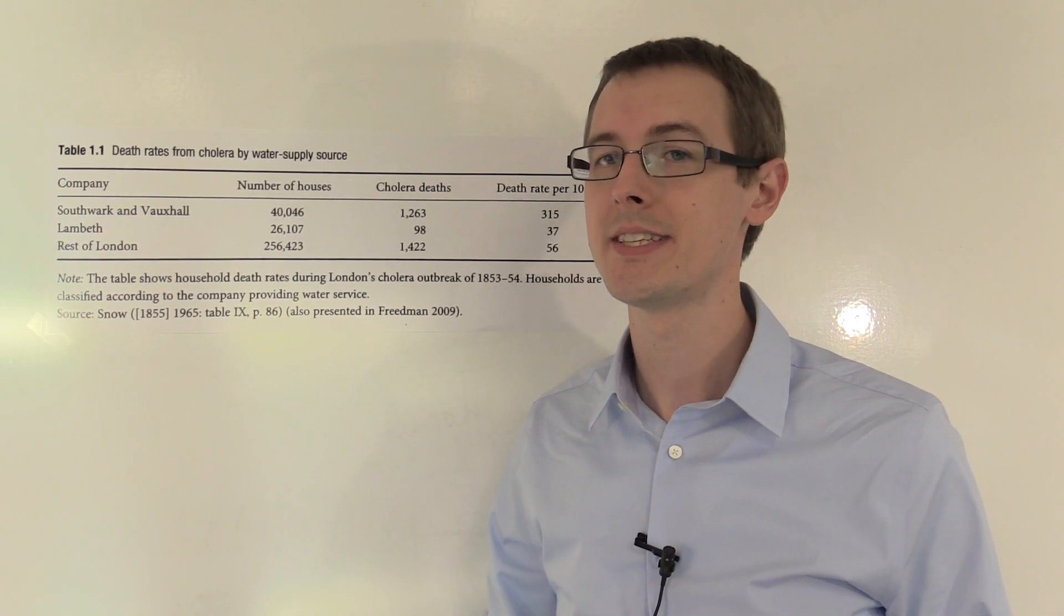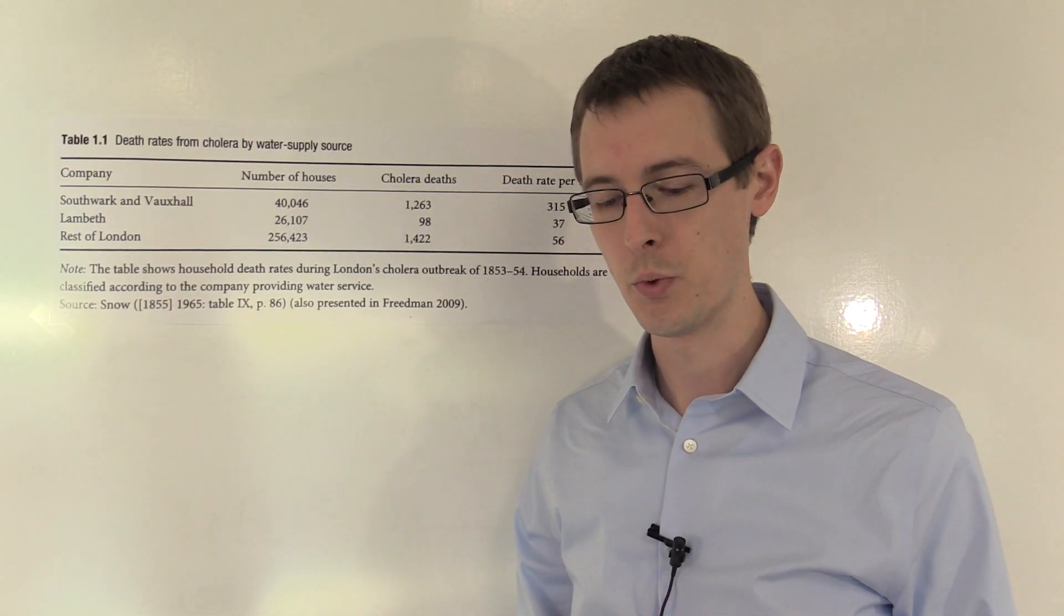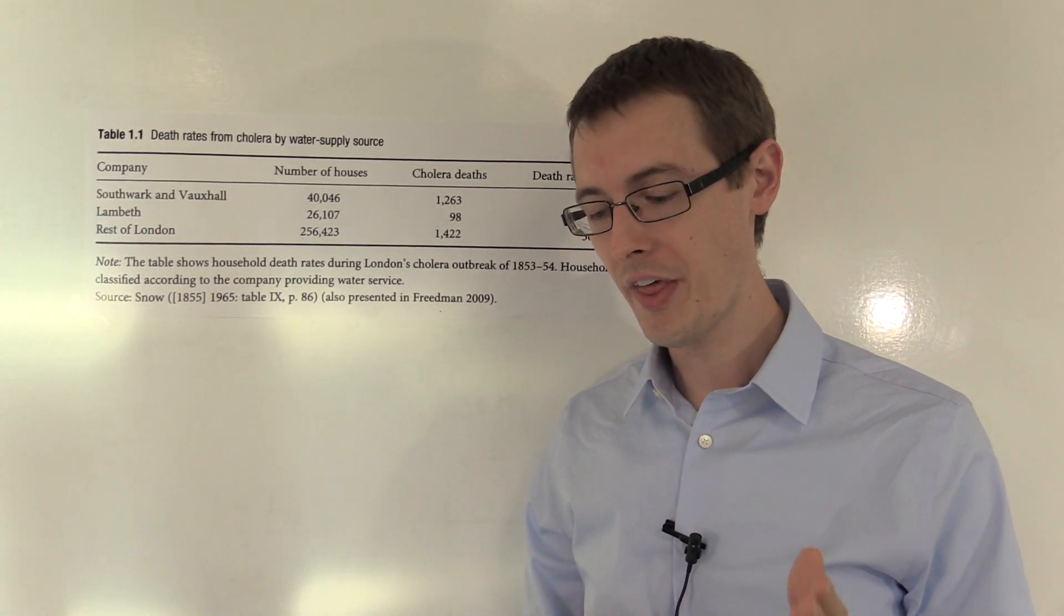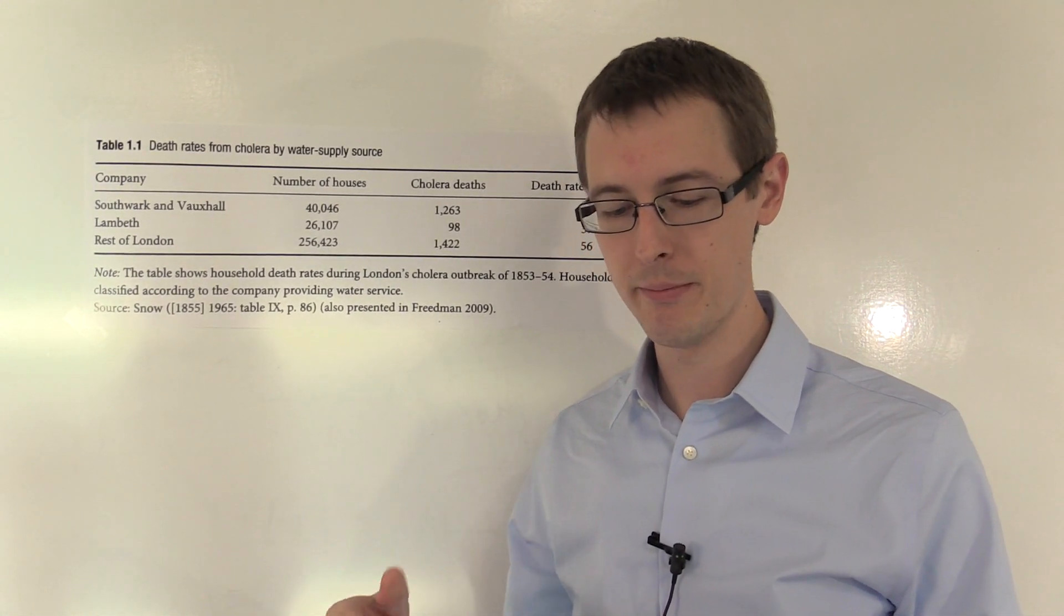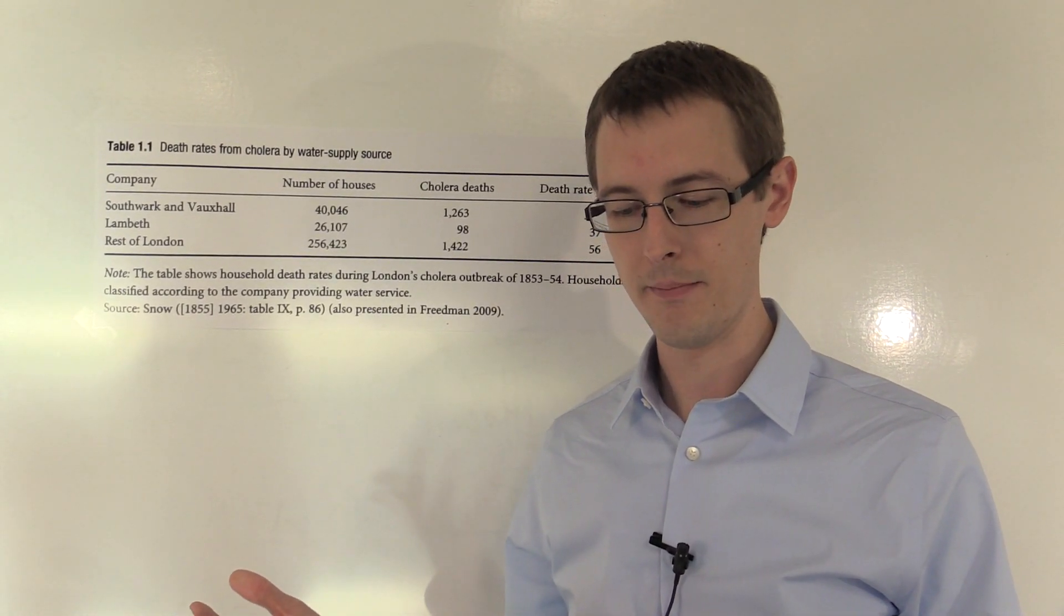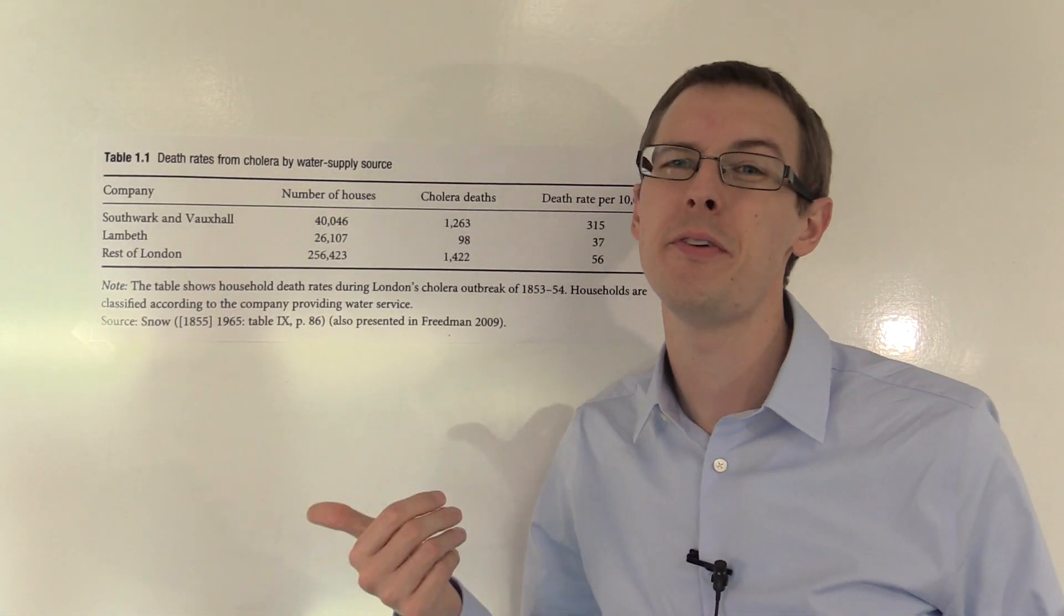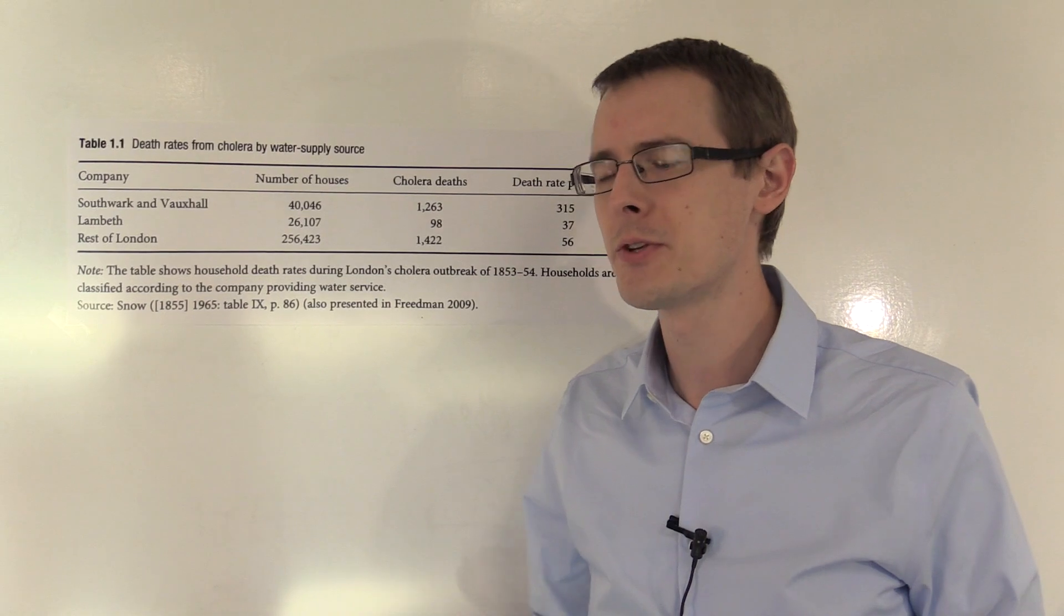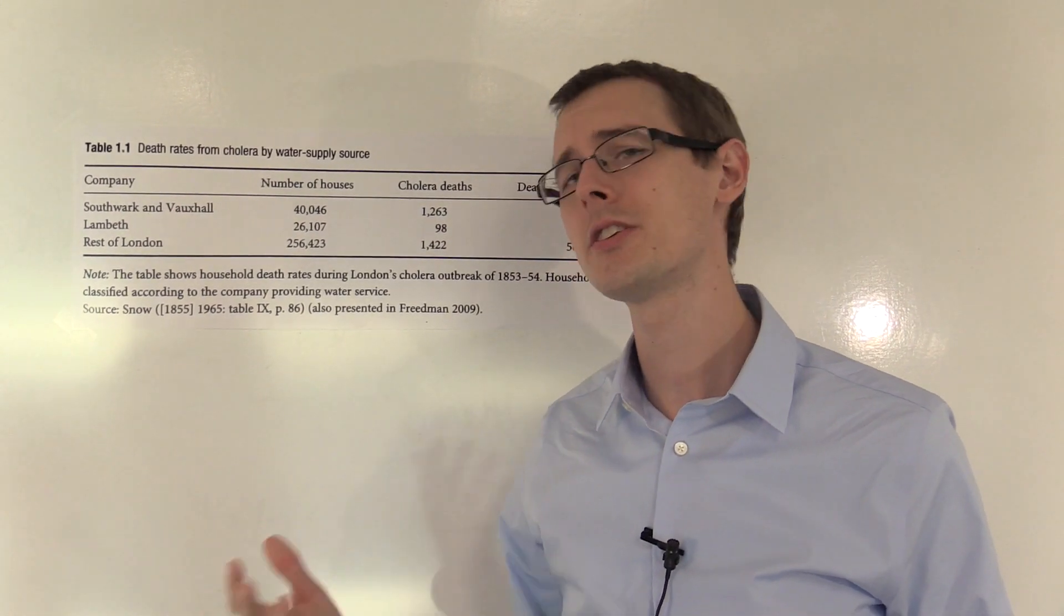Well, Snow also argues that this is not the case. And the reason is, he says, more than 300,000 people of all ages and social classes were, now I'm quoting him, divided into two groups without their choice, and in most cases, without their knowledge. One group being supplied with water containing the sewage of London, and amongst it whatever might have come from the cholera patients, the other group having water quite free from such impurities. He basically argues that people didn't even know that Lambeth moved their pipe. They weren't even making the decisions because their landlords were doing it. So, how could they possibly have selected into picking Lambeth because it was healthier? It's just not plausible.